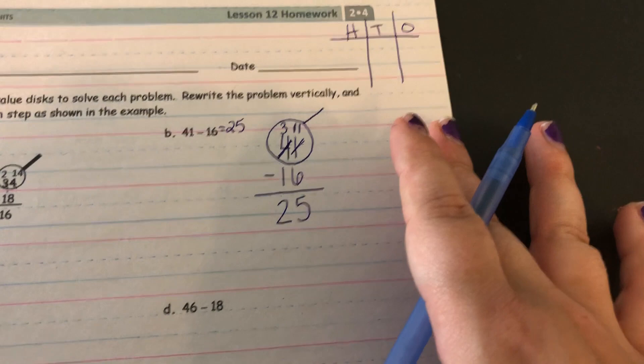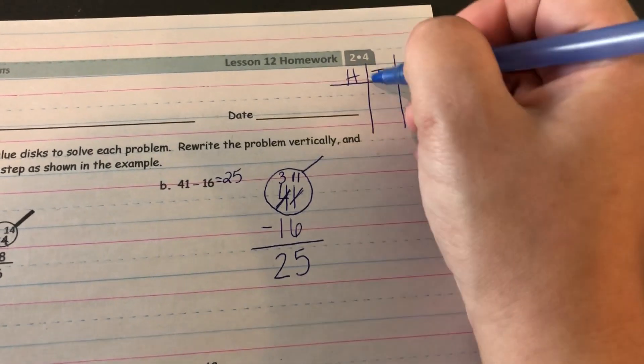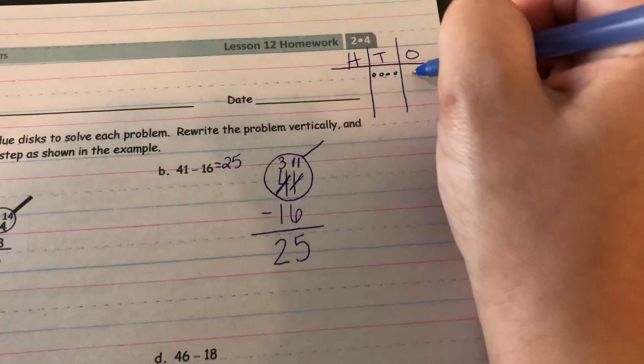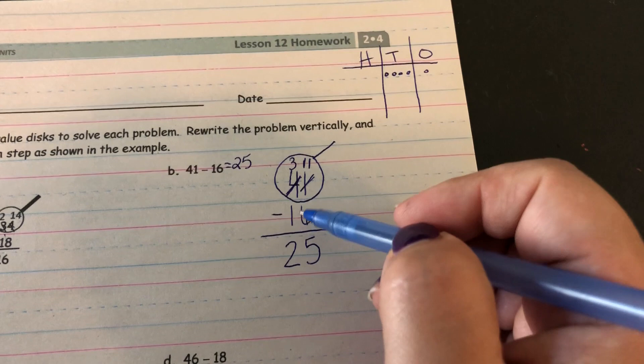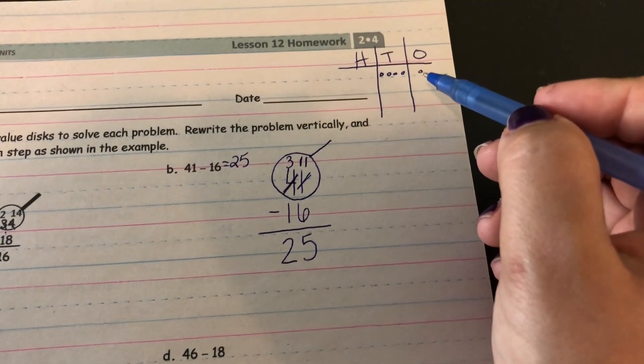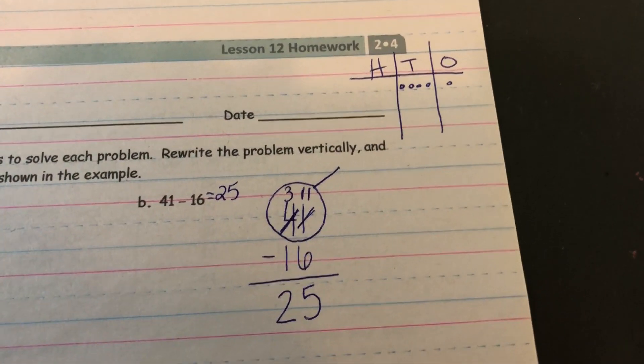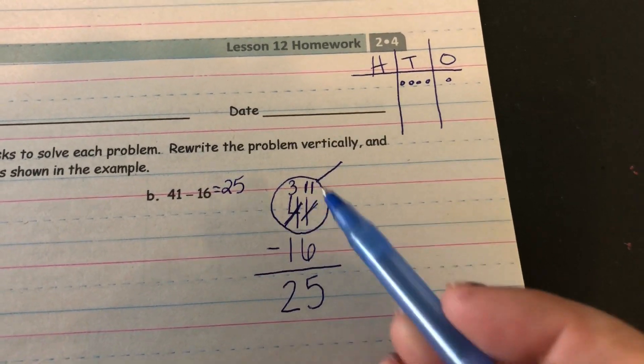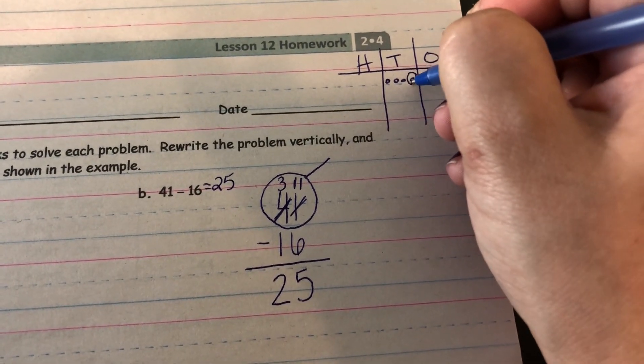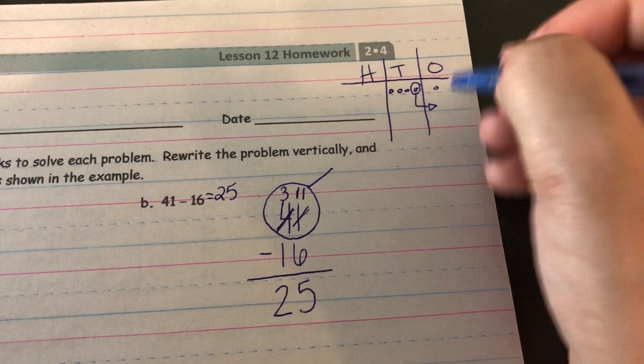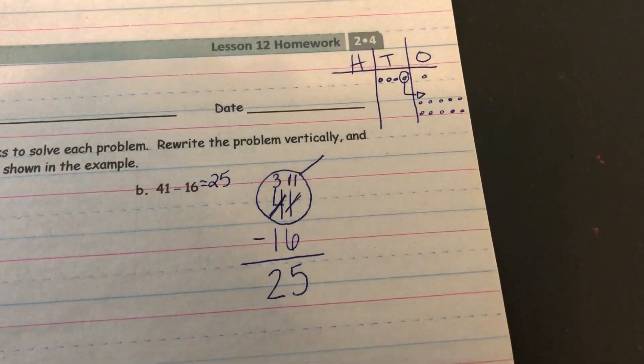And if you're showing this on your place value chart, I'll just use this one. 41 minus 16. So I start off by showing 41. Here's 41. And I want to take away 16. So I start off by taking away six ones, but same problem that I had before. I can't take away six ones. So this is the part in the problem where I unbundled a 10 and rewrote it as 10 ones. Now I can show it on here. Unbundle a 10. And now I'm going to show it as 10 ones.